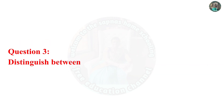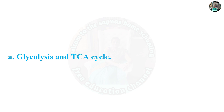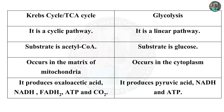Question 3: Distinguish between. A. Glycolysis and TCA cycle: The Krebs cycle or TCA cycle is a cyclic pathway. Its substrate is acetyl-CoA and it occurs in the matrix of mitochondria. It produces oxaloacid, NADH, FADH2, ATP and carbon dioxide. Glycolysis is a linear pathway; its substrate is glucose and it occurs in the cytoplasm. It produces pyruvic acid, NADH and ATP.